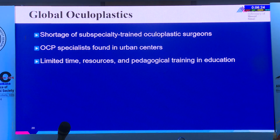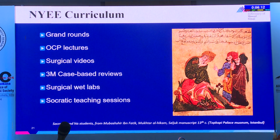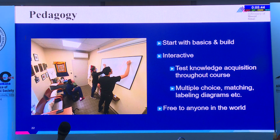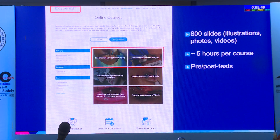Oculoplastic surgeons in many countries live in urban centers without the time or training to teach oculoplastic surgery. At New York Eye and Ear, Socratic teaching sessions have residents draw anatomy, evaluate ectropion clinically, determine surgical management, identify instruments, and watch surgical videos together. This interactive course does all of that from start to finish, testing knowledge acquisition throughout. It is free to anyone in the world.